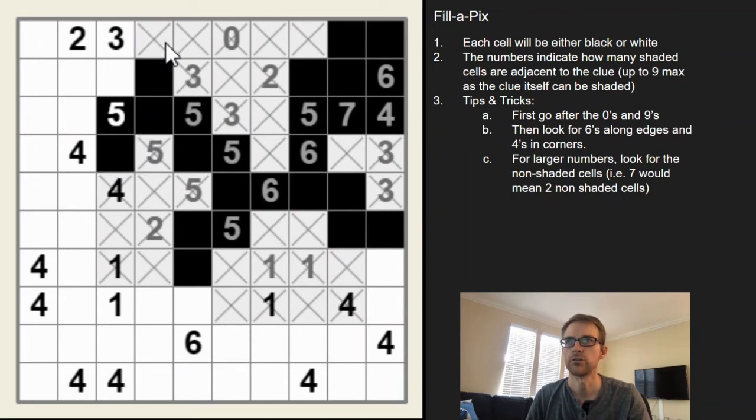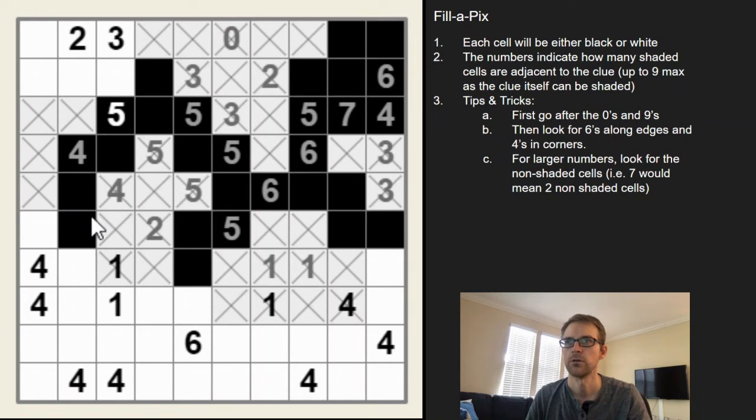so we can X those out. This five needs that W shape. This five is the U shape. This three is solved. This four has to be those. This four solved, it's that Tetris shape. The five has that W shape, so we're good there. This three only has one possibility. The two solved now.